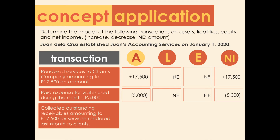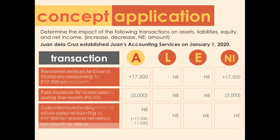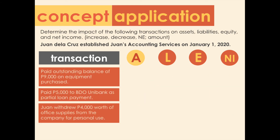Transaction six: collected outstanding receivables of 17,500 for services rendered last month. This results in an increase in cash and a decrease in receivables of 17,500 each — both assets — so the net effect on assets is zero. There is also no effect on liabilities, equity, and net income. Transaction seven: paid outstanding balance of 9,000 pesos on equipment purchased. This decreases assets by 9,000 and also decreases accounts payable — liabilities — by 9,000.